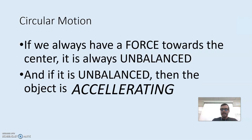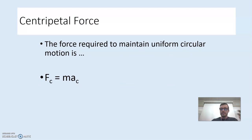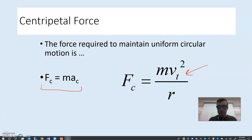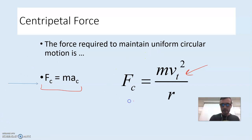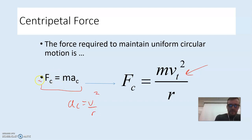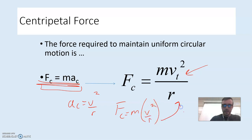C stands for centripetal — from the Latin centrum patere, meaning center-seeking. The centripetal force is always the force acting towards the center of the circle. So here's the big idea: if we always have a force towards the center, it is always unbalanced, and if it's unbalanced, the object is always accelerating. The equation for centripetal acceleration, AC = v²/R, is on your equation sheet. Knowing F = MA and substituting AC = v²/R gives us FC = Mv²/R — the equation for centripetal force.